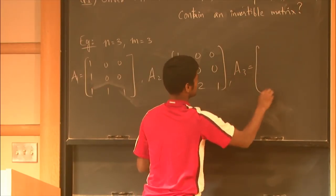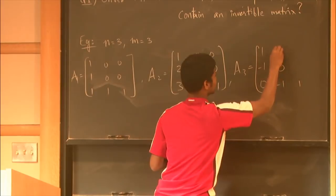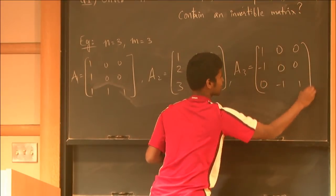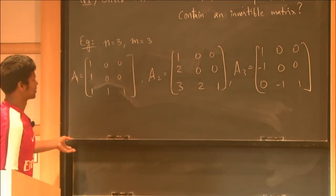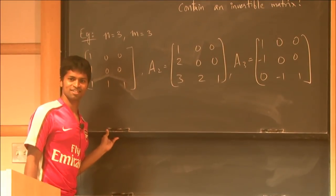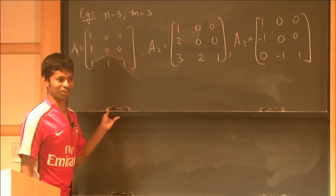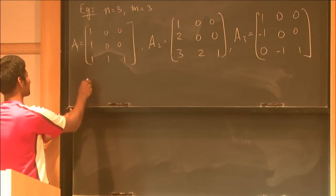And A3 is let's say 1, minus 1, 0, minus 1. What's the answer to this? Does the span of this contain an invertible matrix? It's not a hard question. It's also not a trick question. No, right? So the answer in this case is no.